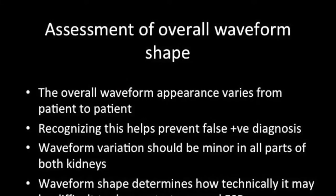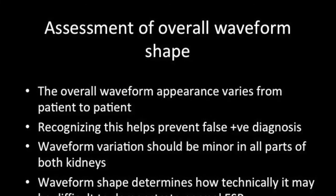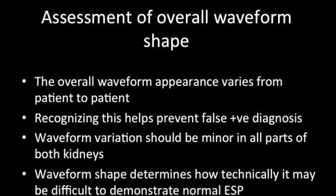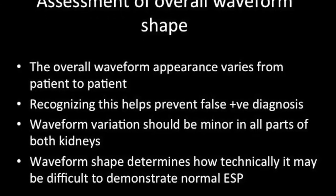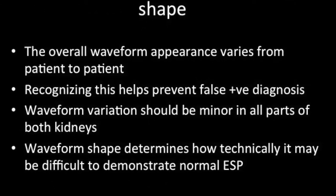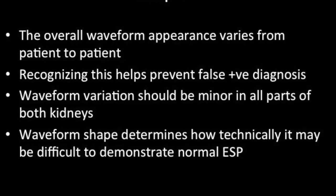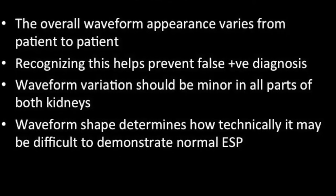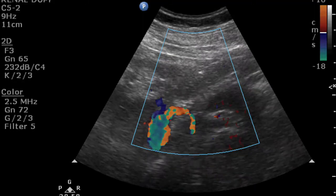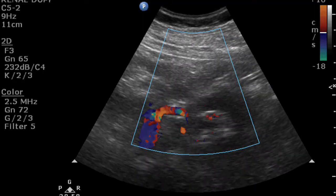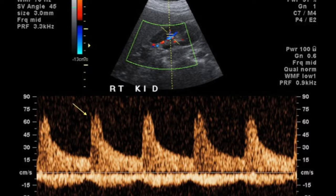Assessment of overall waveform shape involves recognizing patterns that help prevent false positive diagnoses. It is usually minor in all parts of both kidneys, and waveform shape determines how technically difficult it may be to demonstrate the normal early systolic peak. In this case, the early systolic peak is easy to recognize.